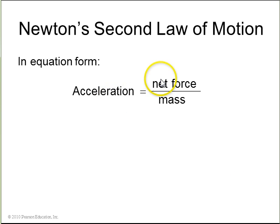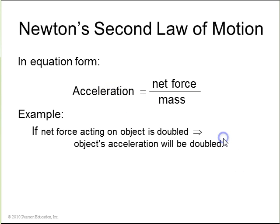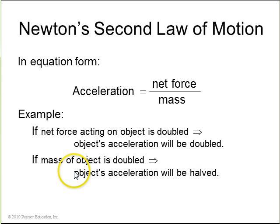In equation form, it's A equals net force over mass. Example, net force is doubled, the acceleration is doubled, the mass of an object is doubled, the acceleration is halved.